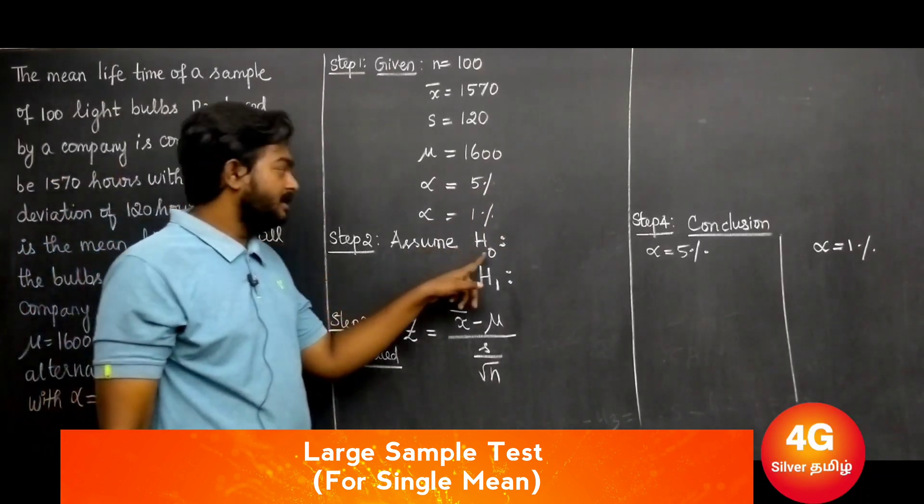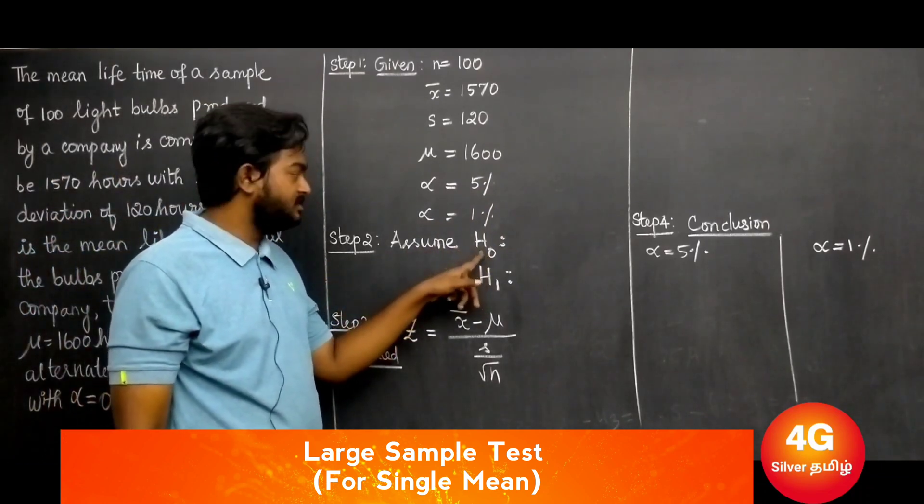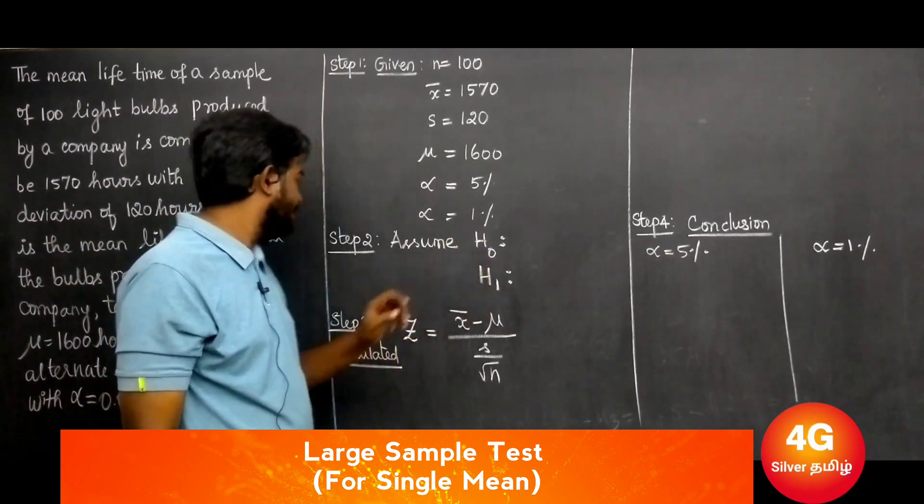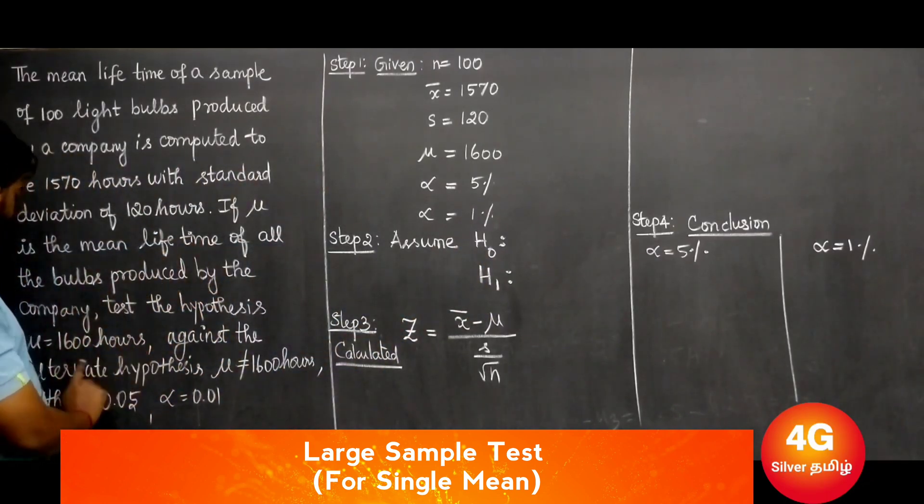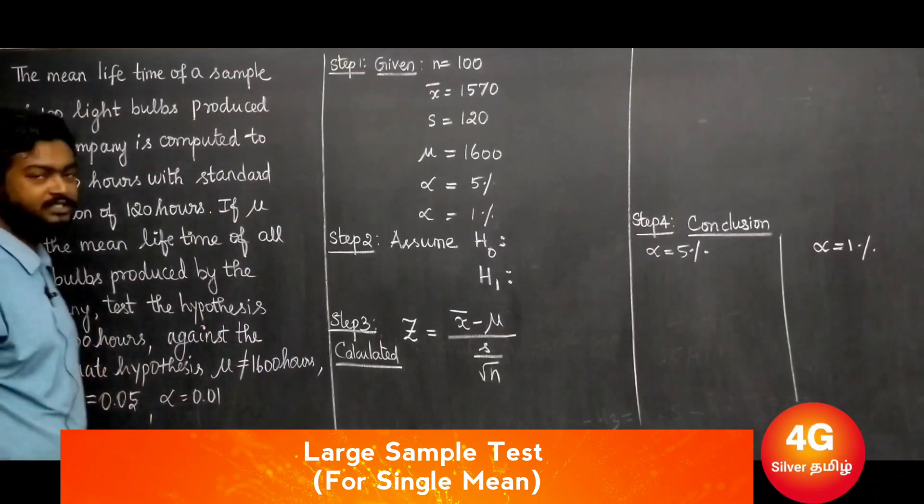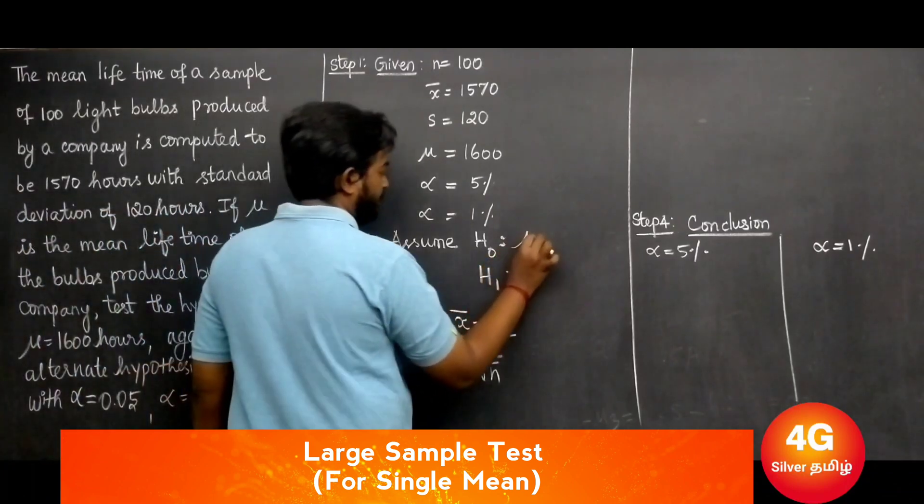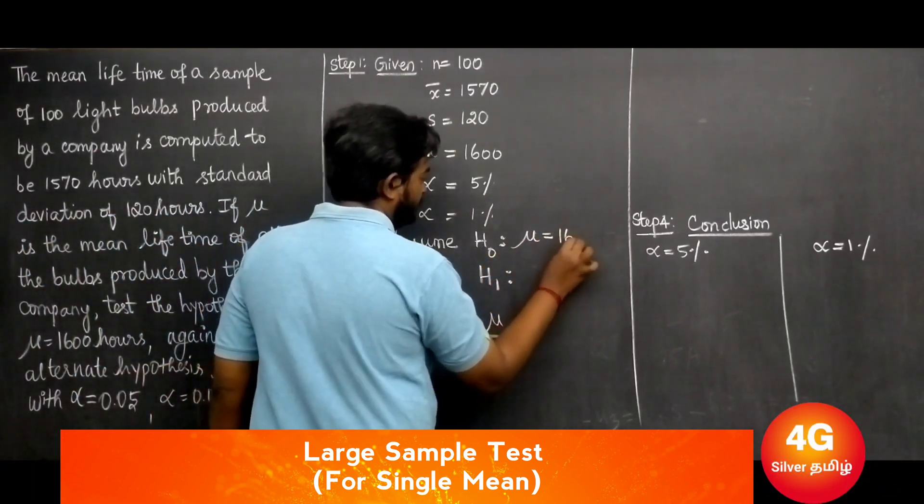Step two: assume the null hypothesis H0, where μ equals 1600.